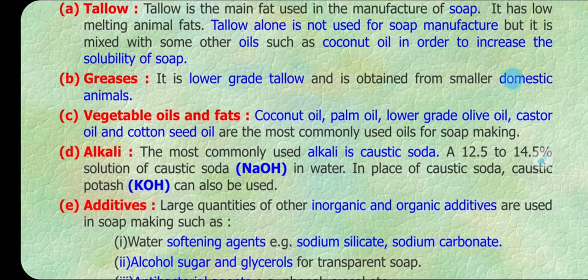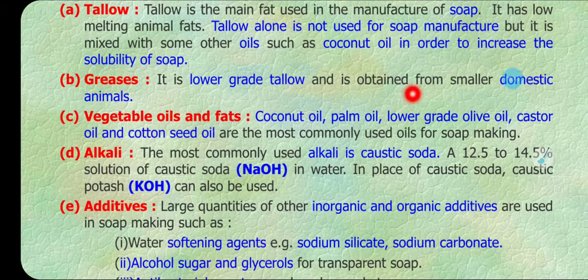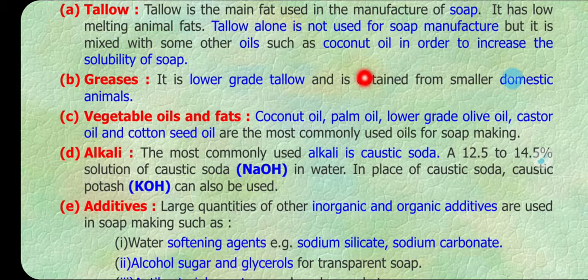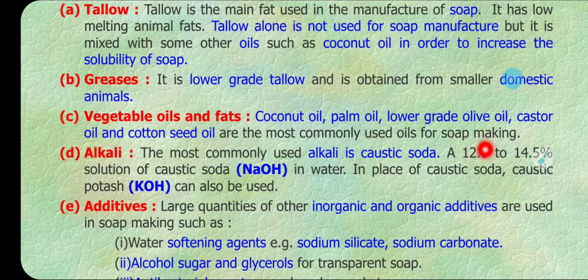Second is grease, which is a lower grade tallow obtained from smaller or domestic animals — an animal source. Next is vegetable oils or fats: coconut oil, palm oil, castor oil, and cottonseed oil are the most commonly used oils for soap making.